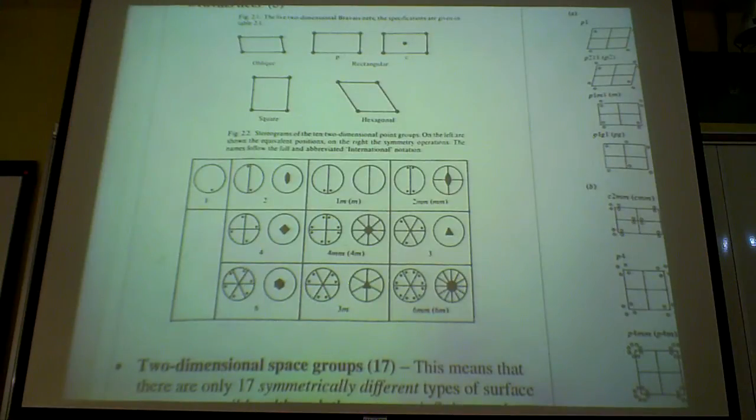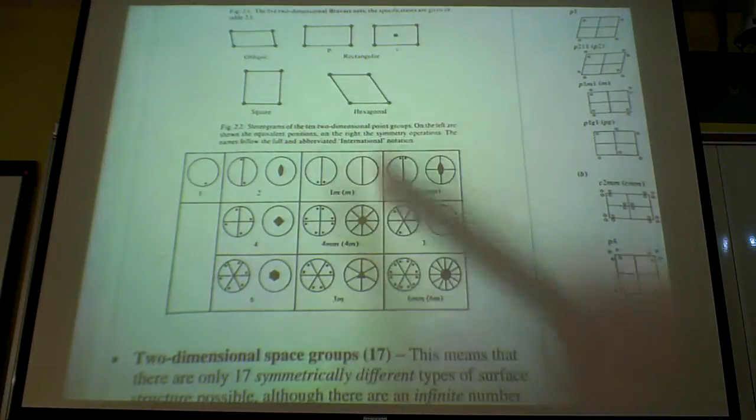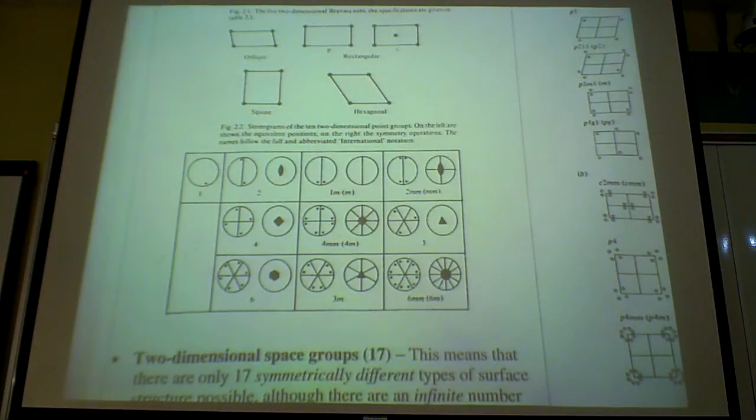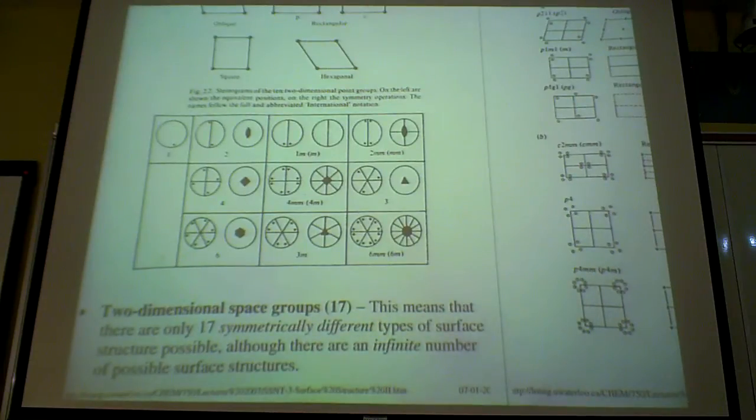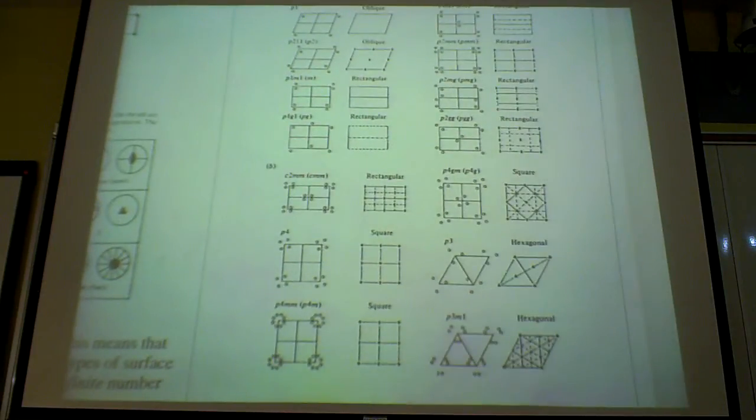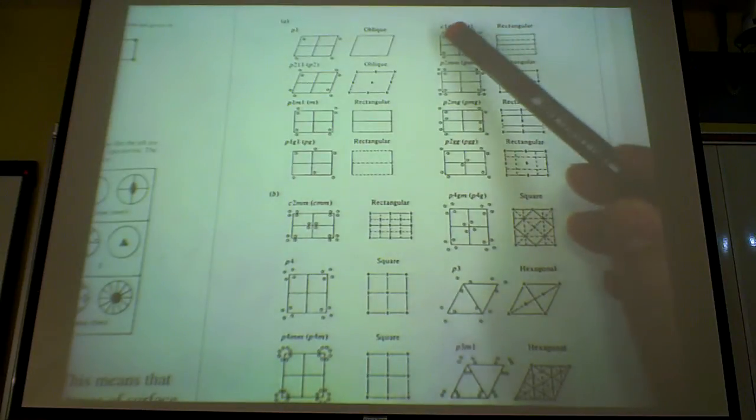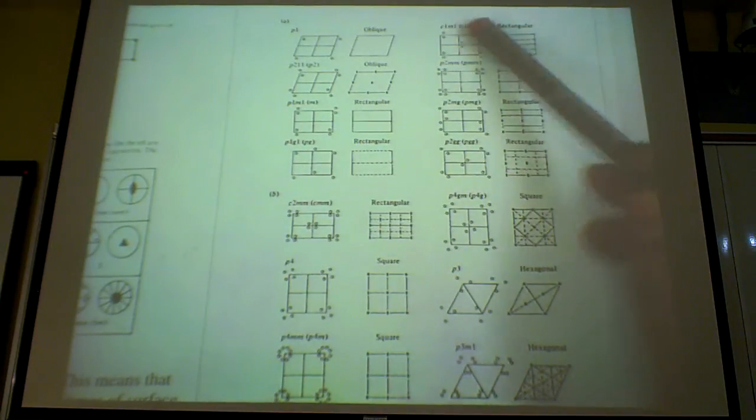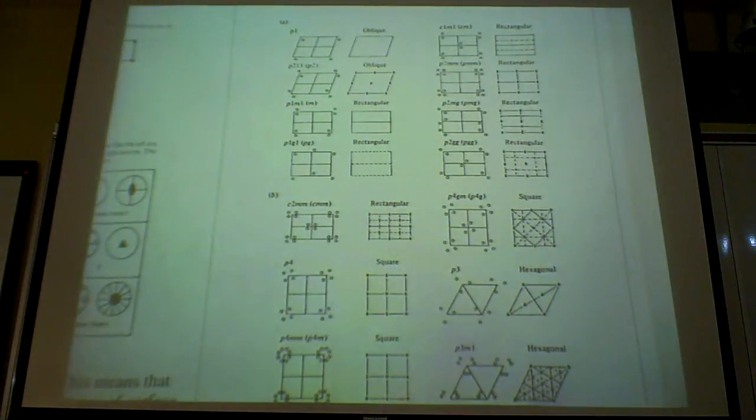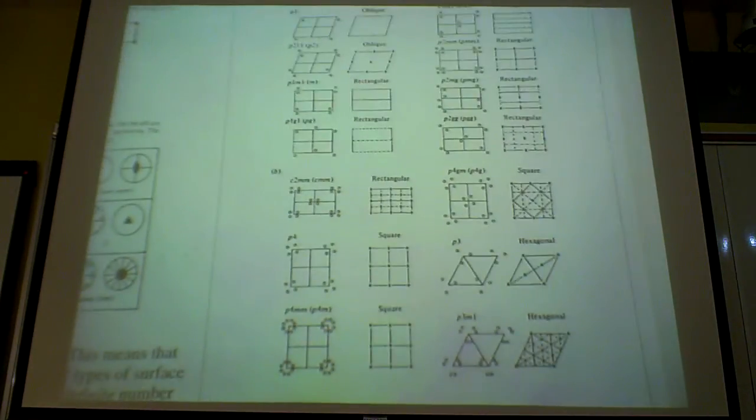And then from these symmetry, past the lattice, you add translation symmetry. You then generate 17 different so-called space groups of 2D symmetry. And here they are. You have these little dots representing atoms. And you apply symmetry to it. So again, these are just to give you the scope, the scope of these space groups.